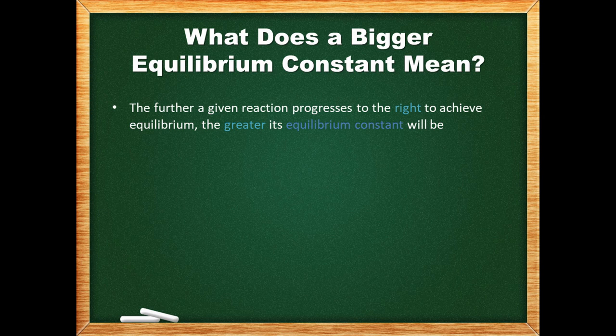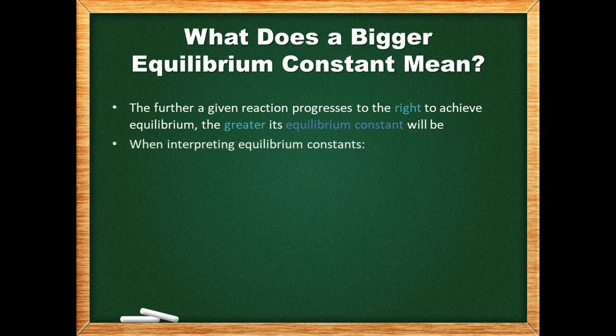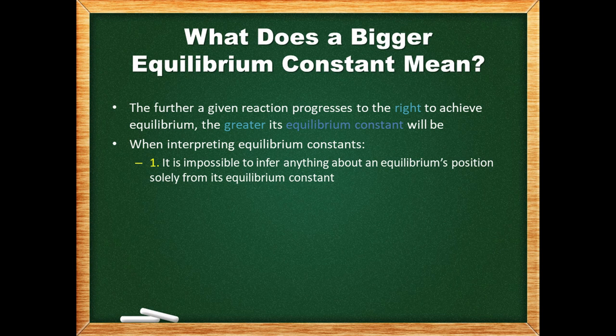What does a bigger equilibrium constant mean? Remember that our equilibrium expression has products in the numerator and reactants in the denominator. This means that the extent of the reaction's progress towards products is indicated by the size of the equilibrium constant. The further a given reaction progresses to the right to achieve equilibrium, the greater its equilibrium constant will be. In addition to knowing what a bigger equilibrium constant means, it is just as important to know what it does not mean. We don't want to infer too much from the size of our equilibrium constant. It is impossible to infer anything about an equilibrium's position solely from its equilibrium constant.